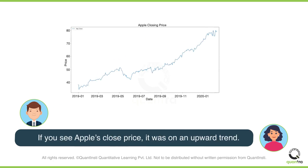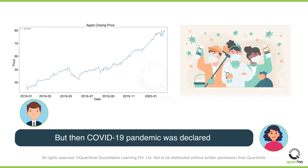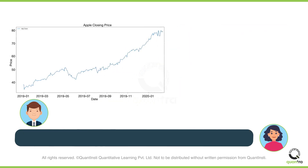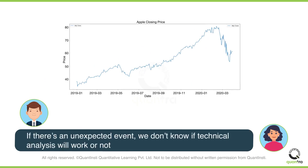From 2019 to the 20th of February 2020, Apple's price was on an upward trend. Since technical indicators look at past price data, most technical indicators would have given a buy signal at this point. But then the COVID-19 pandemic was declared, and Apple's stock price, along with the broad market index, crashed. If there's any unexpected event, we don't know if technical analysis will work or not.